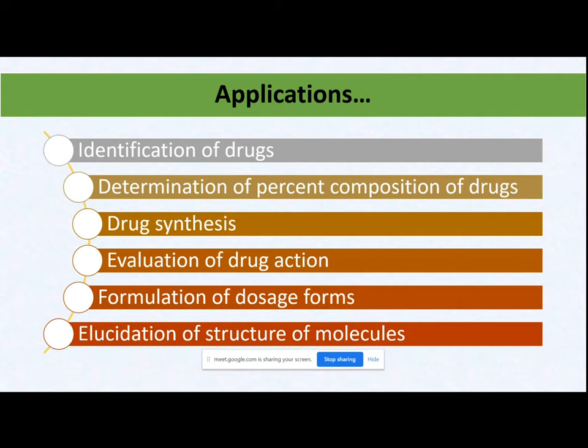Second, you can determine the percentage composition of a drug. If the drug is available in a mixture, by checking the physical property at different concentrations, you can determine in what percentage composition the drug is present in your sample.